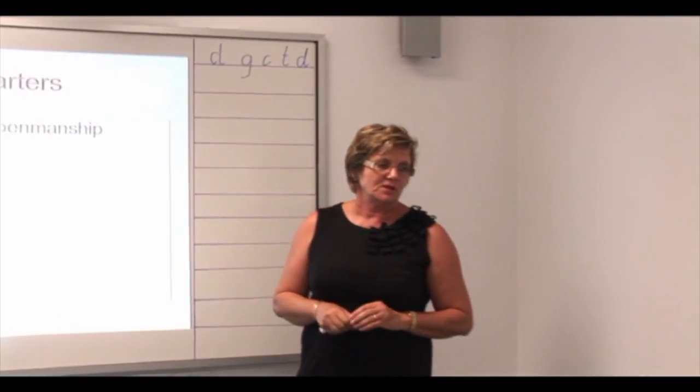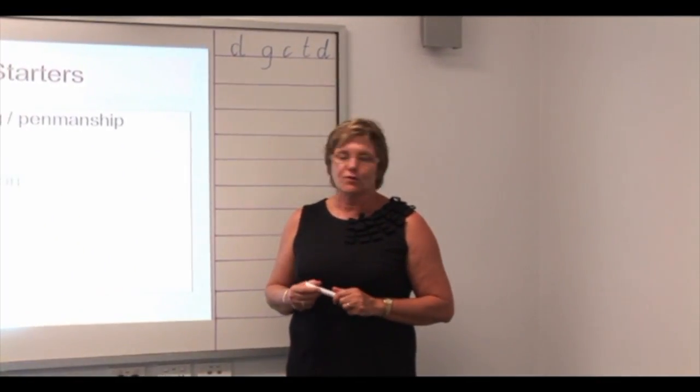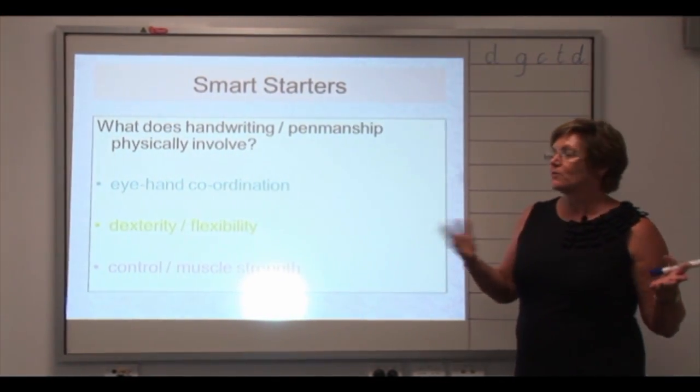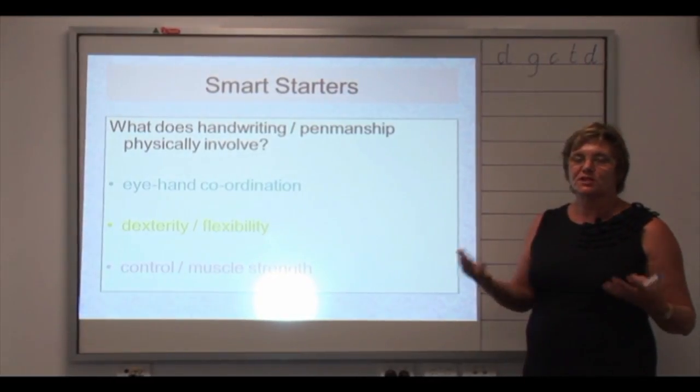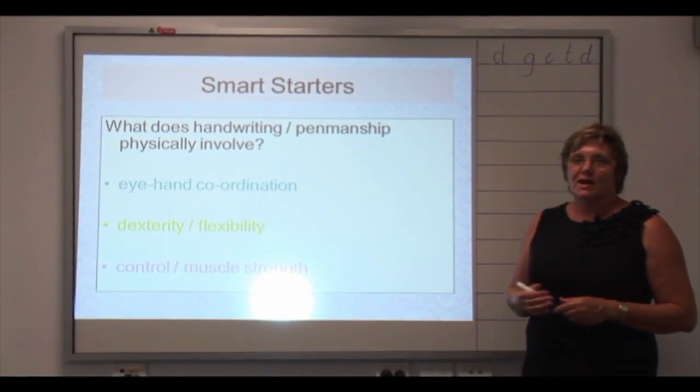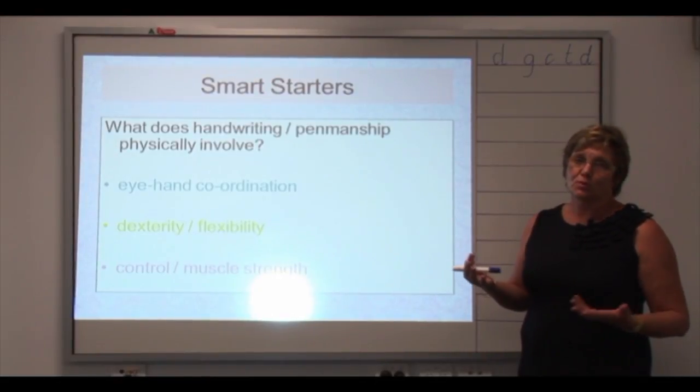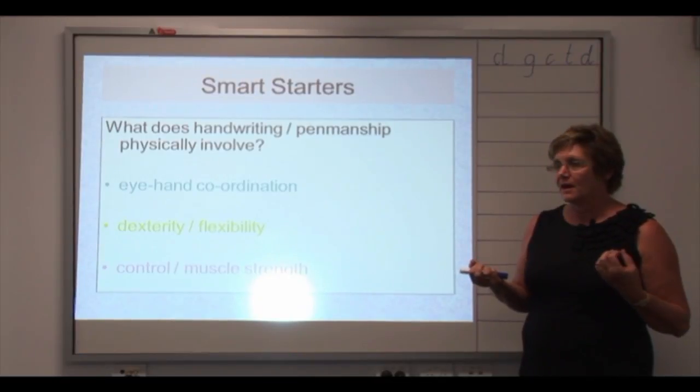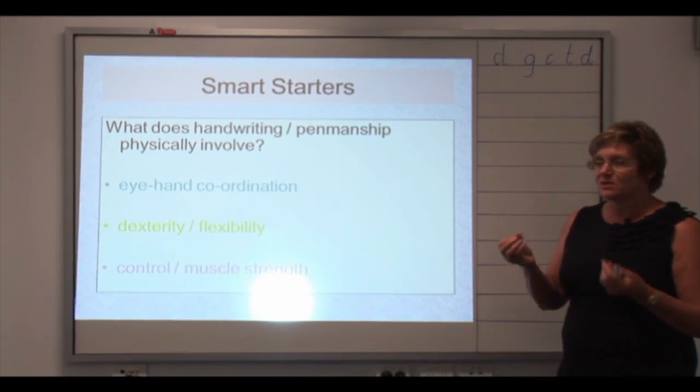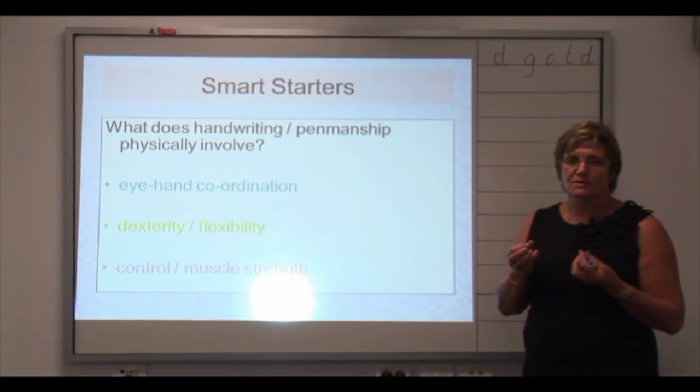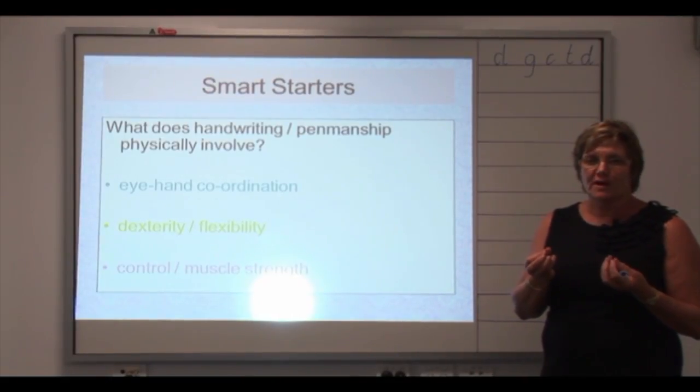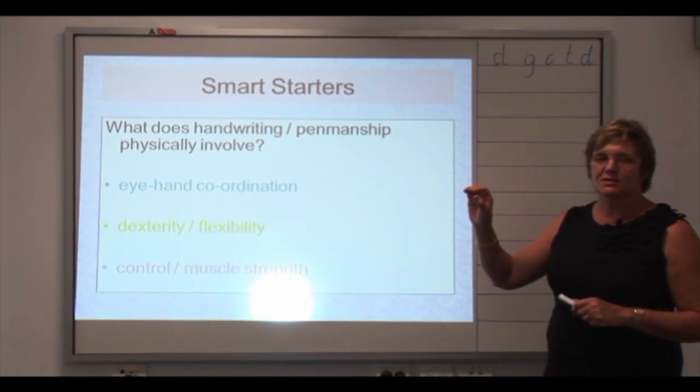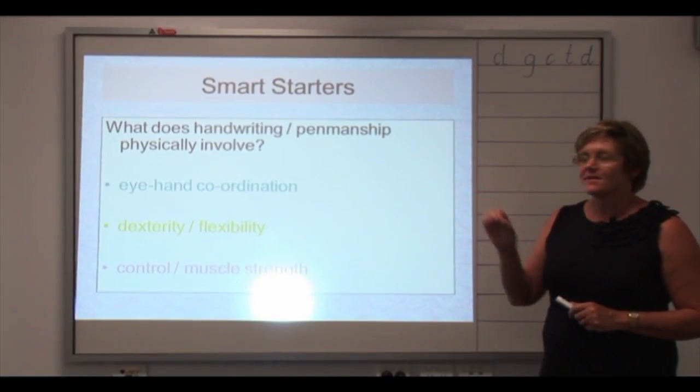So how does handwriting or penmanship develop and what does it involve? Well it of course demands good eye-hand coordination so we know that everything moves from the gross motor to the fine motor. So initially this means your child having lots of play with big things, balls, bats, that type of thing, lots of play-doh, water play, sand play where they're manipulating finer things such as lego and jigsaws or finer play equipment and through all that activity they start to develop a nice strong pincer grip which is what we need.